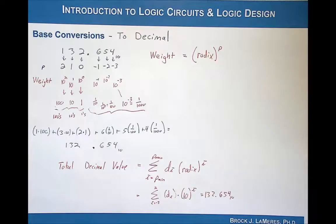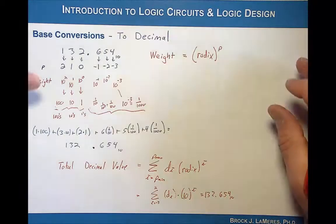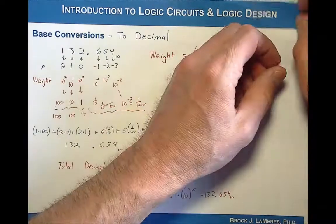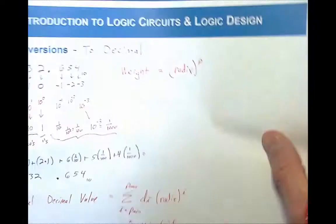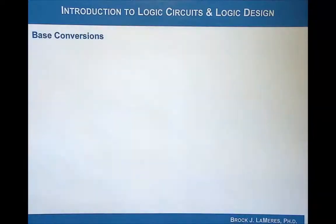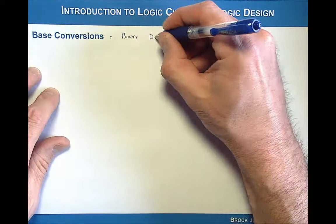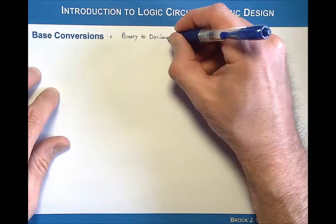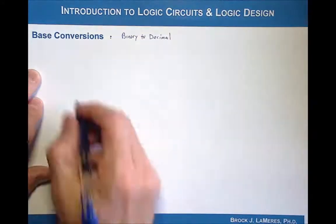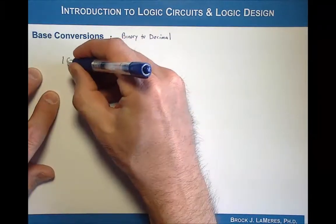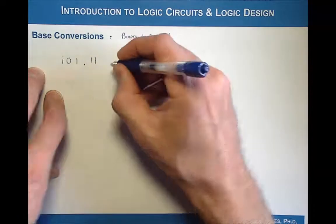That's kind of circular in nature, because we just took a decimal number and converted it back to decimal, but we did it to illustrate a point of how you convert any number into decimal. So let's take an example of how we could extend that to converting binary to decimal. Let's convert 101.11 base 2 and find its decimal value.